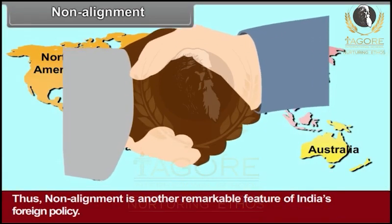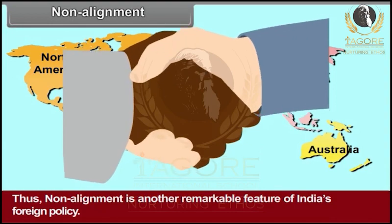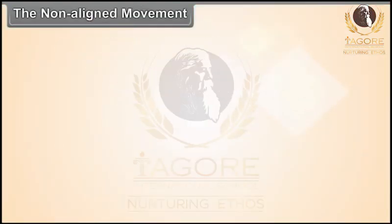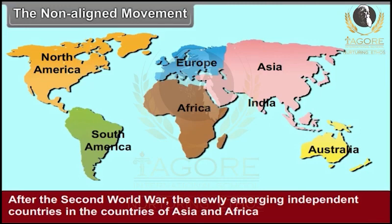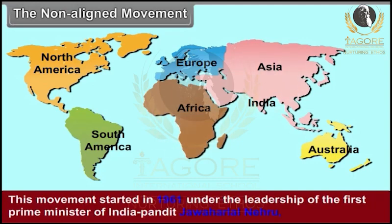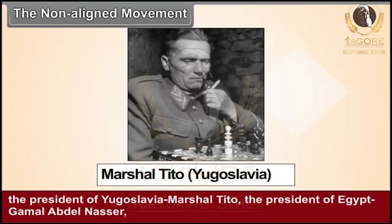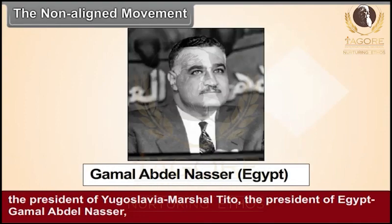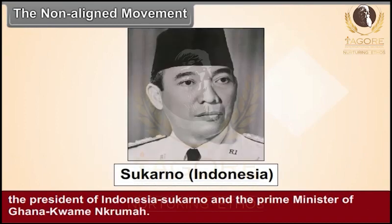The Non-Alignment Movement: After the Second World War, the newly emerging independent countries in the continents of Asia and Africa supported the idea of non-alignment, and it became an important movement. This movement started in 1961 under the leadership of the first Prime Minister of India, Pandit Jawaharlal Nehru; the President of Yugoslavia, Marshal Tito; the President of Egypt, Gamal Abdel Nasser; the President of Indonesia, Sukarno; and the Prime Minister of Ghana, Kwame Nkrumah.